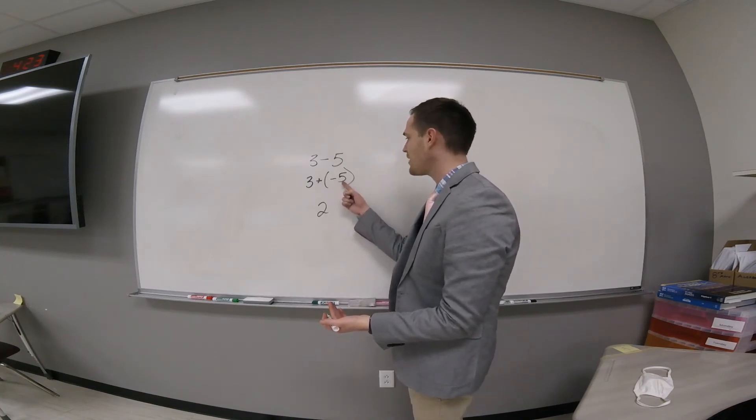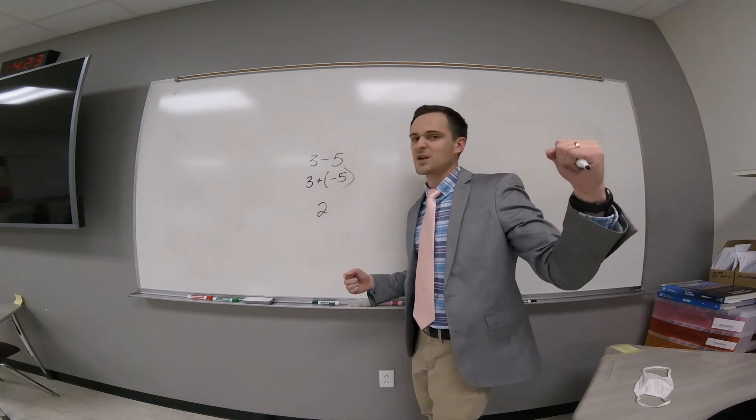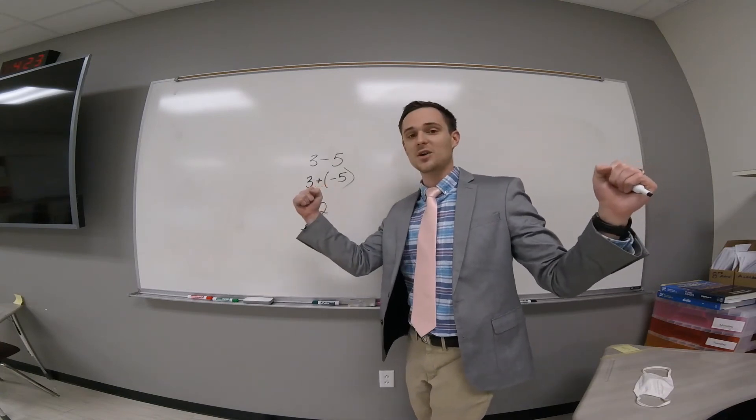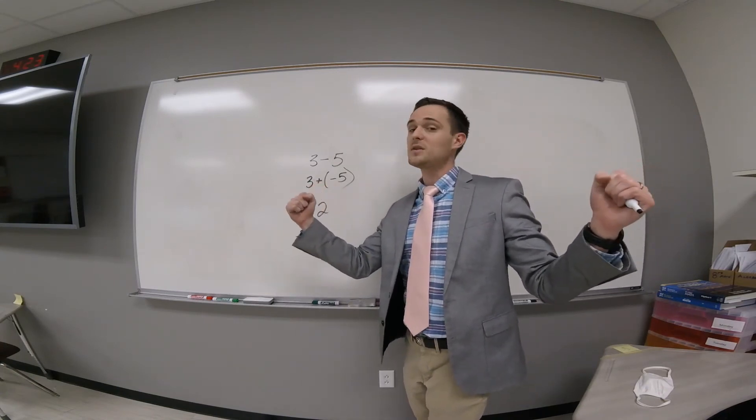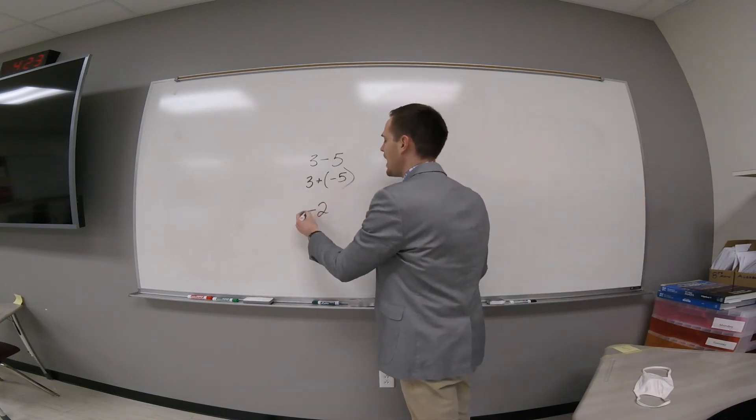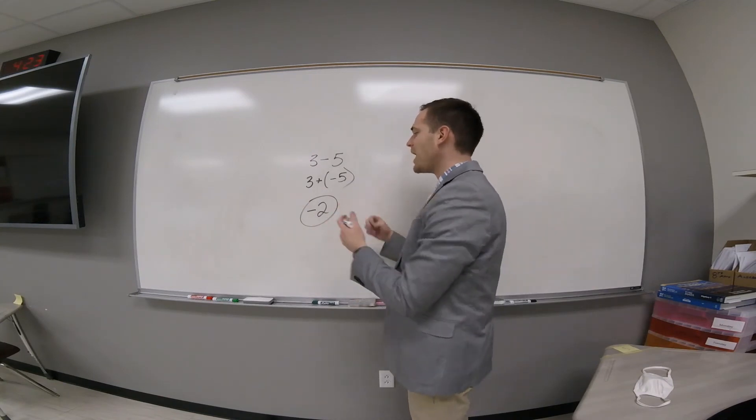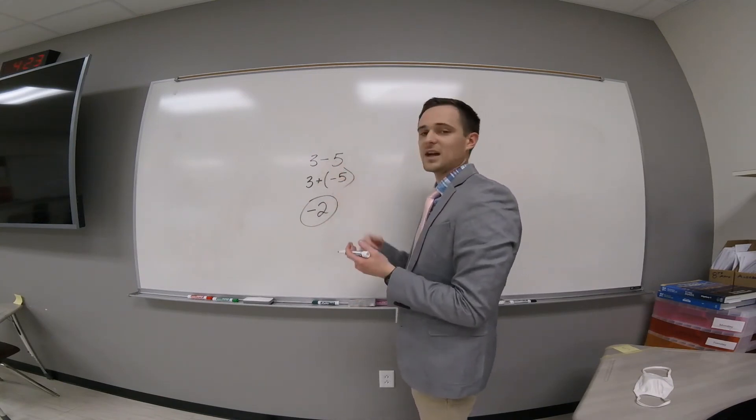Take the sign of the higher number. Oh, the higher number is five. Is five or three bigger? If they were going to battle and you had three positives on one side and five negatives on the other, who would win? Probably the negatives because they got more people. That's what we mean. Take the sign of the higher number. That'll be exact.